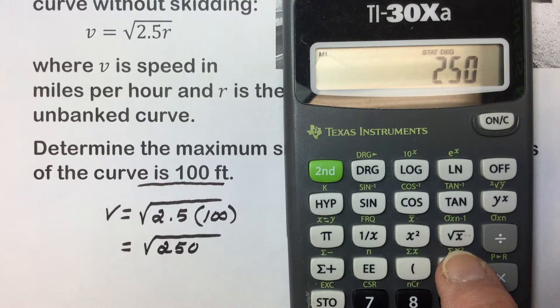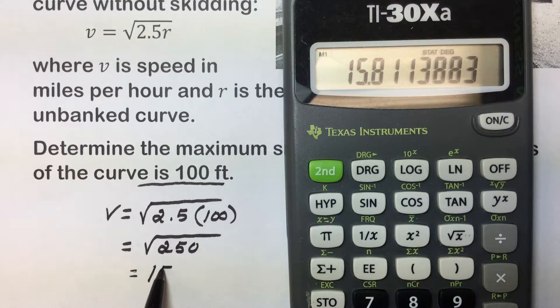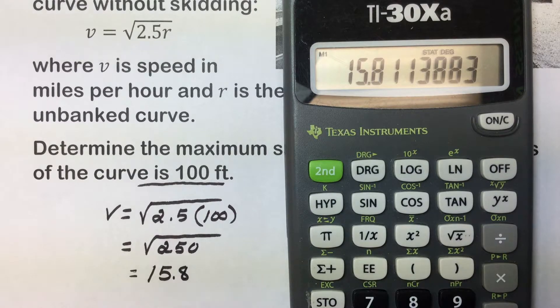Then tap the square root key to give me an approximate value of 15.8 miles per hour for the maximum speed at which a car can travel around this curve having a radius of 100 feet without skidding.